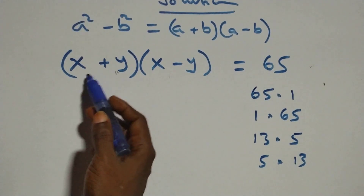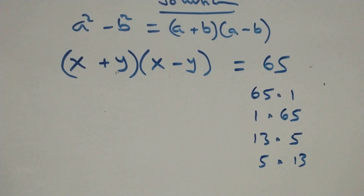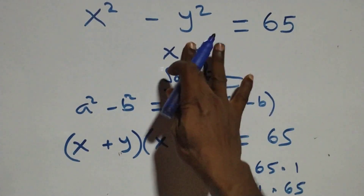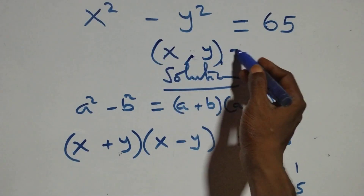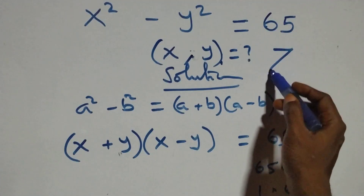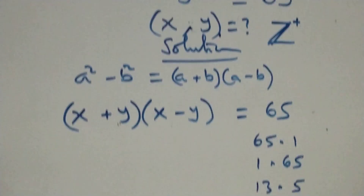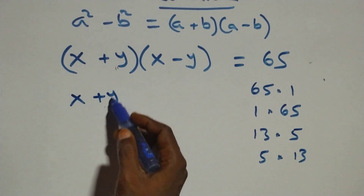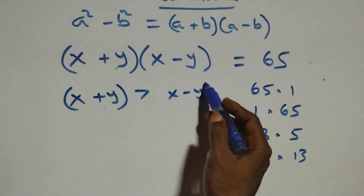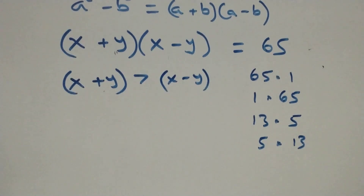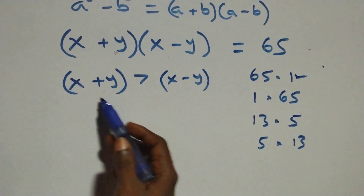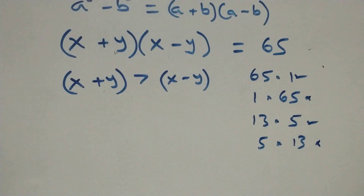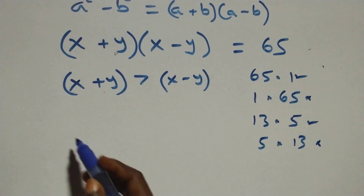For x and y to be members of the positive integers, we need x plus y to be greater than x minus y. The factor pair 65 times 1 satisfies this condition, and 13 times 5 also satisfies this condition. So we have two valid cases.